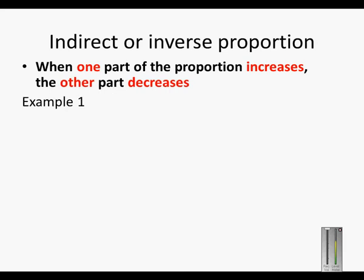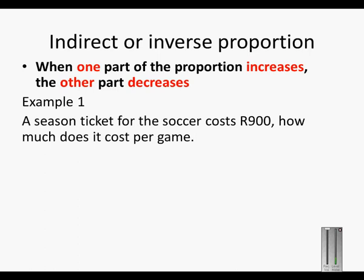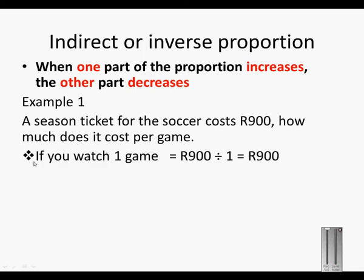Here is an example. A season ticket for the soccer costs 900 Rand. How much does it cost per game? So if you watch one game, that game costs you 900 Rand. The calculation is 900 divided by 1 is equal to 900.